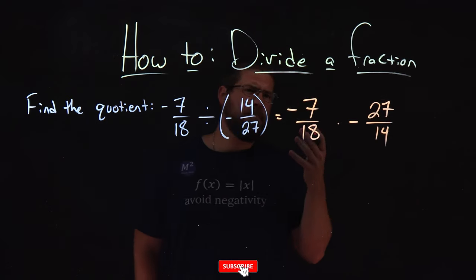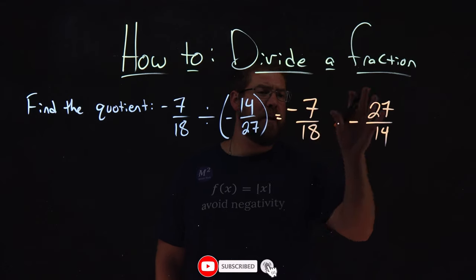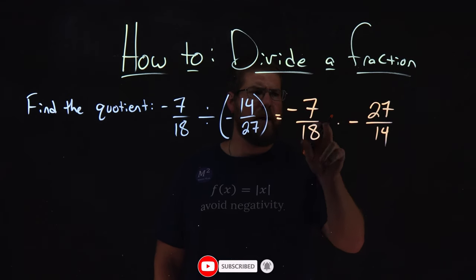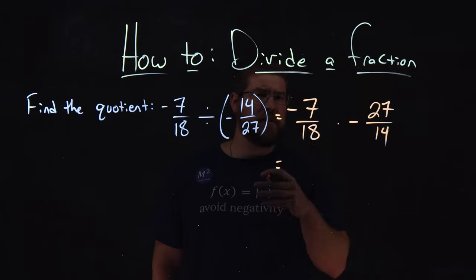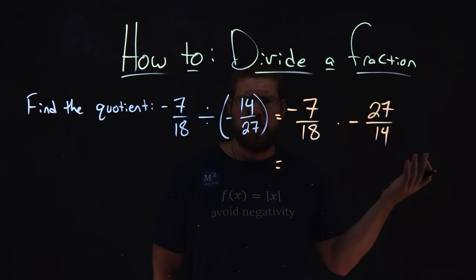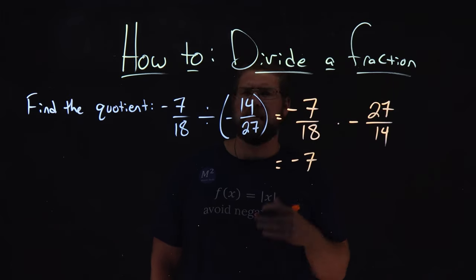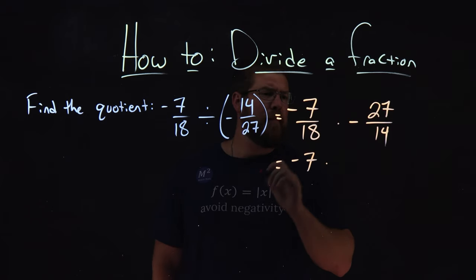Now we can break down the numbers that are multiplied in the numerator and denominator. So let's write this as one fraction, because our rule says we just multiply across. Negative 7 stays up top there, multiplied by...